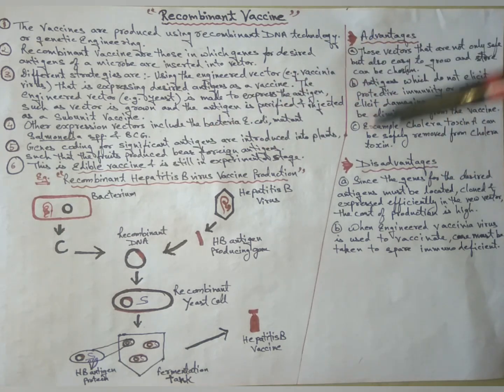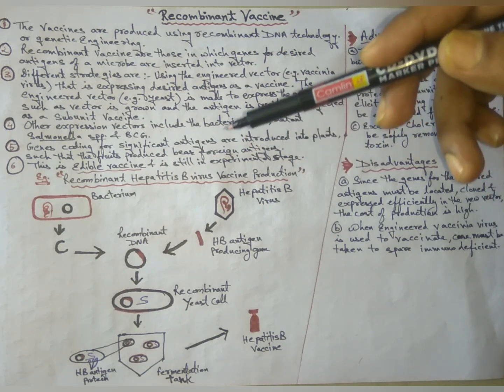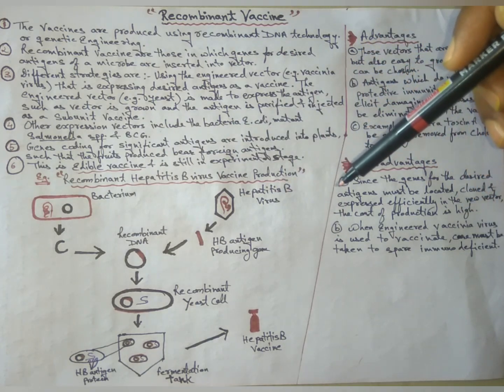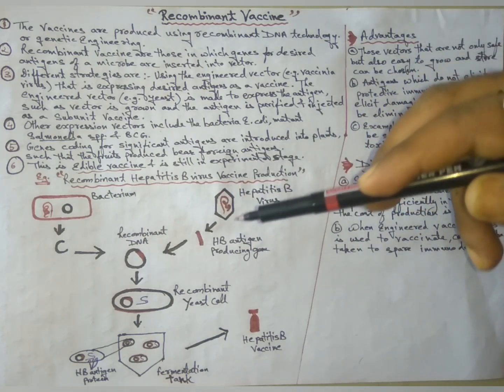Next, coming to recombinant hepatitis B virus vaccine production. This is the overall mechanism of recombinant HBV vaccine production.